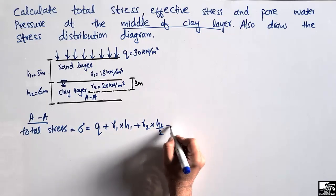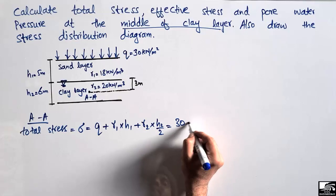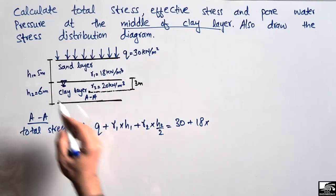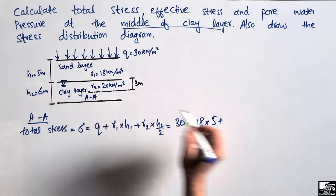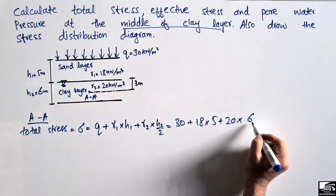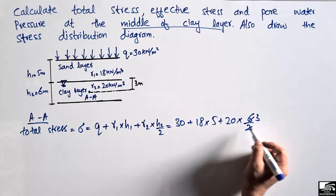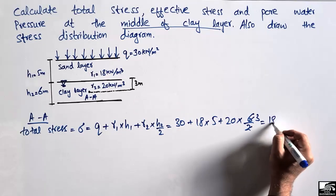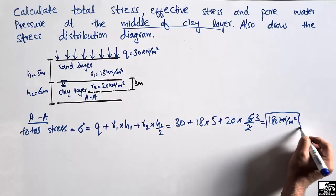Substituting the values: Q is 30, gamma 1 is 18 multiplied by h1 which is 5, and gamma 2 is 20 multiplied by h2/2 which is 3. Adding and multiplying these gives sigma equal to 180 kN/m². This is the total stress at the mid of the clay layer.